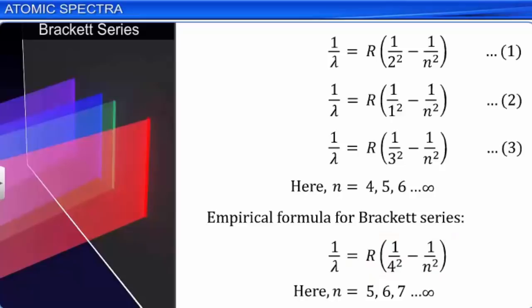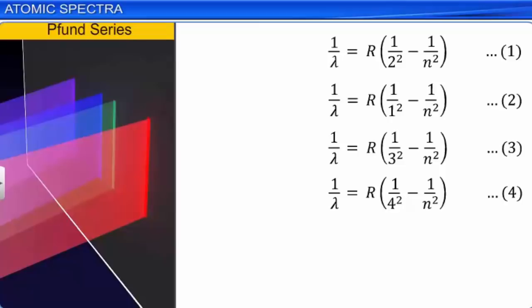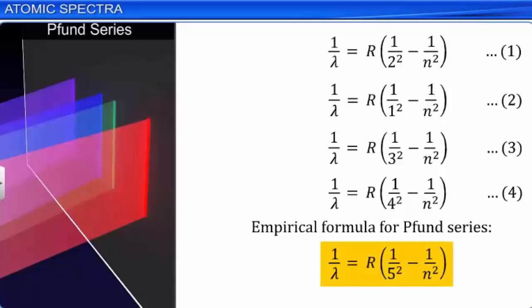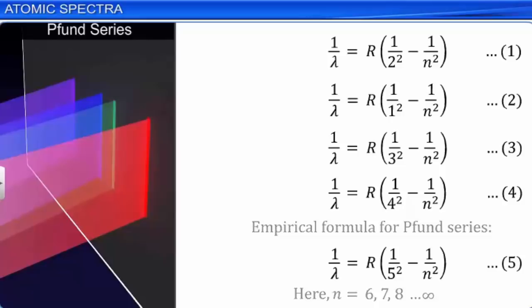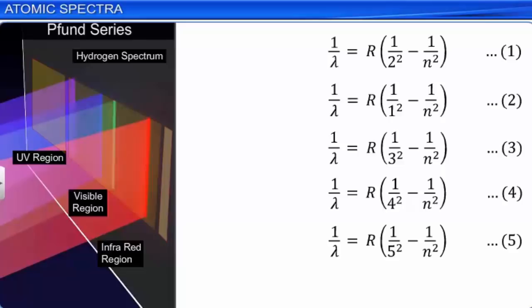Spectra of only a few elements, like hydrogen, singly ionized helium, and doubly ionized lithium, can be represented by these simple formulae. Still, these equations are very important as they give the wavelengths that a hydrogen atom radiates or absorbs. When white light passes through a gas and the transmitted light is analyzed, we get a spectrum called the absorption spectrum. The absorption spectrum consists of dark lines corresponding to the wavelengths formed in the emission spectrum of the same gas. An element can absorb those wavelengths which it can emit. The absorption spectra of elements consists of dark lines against a bright background.